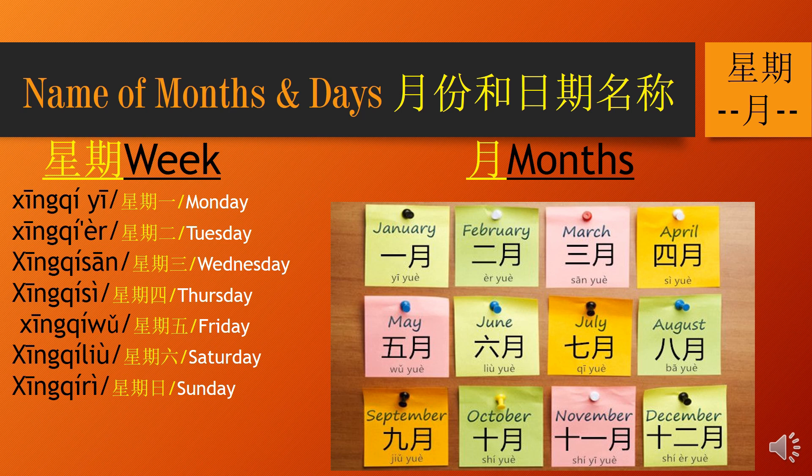九月, 九月 — September. 十一月, 十一月 — November. 十一月 — November. 十二月, 十二月 — December.